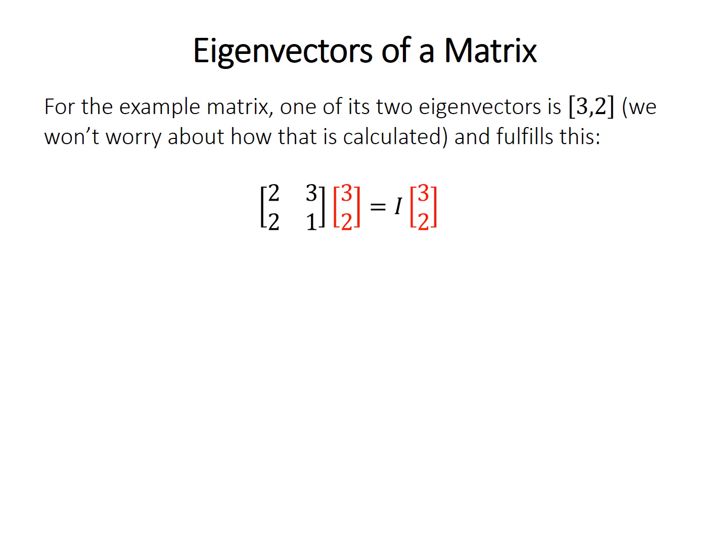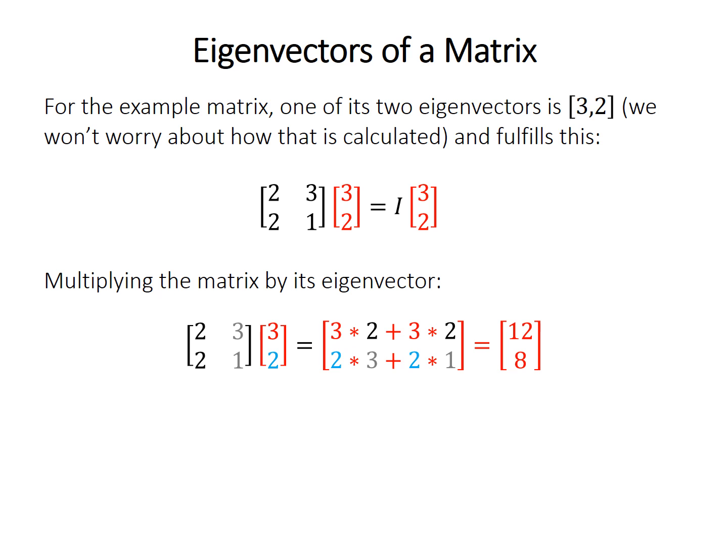I won't get into how the eigenvector is actually calculated, but one of the eigenvectors of this example matrix is [3, 2]. If we multiply the matrix by its eigenvector, you get the vector [12, 8]. And that's the same as the vector [3, 2] times 4. This is how the eigenvector fulfills the definition: matrix times eigenvector gives [12, 8], and eigenvector times 4 also gives [12, 8].